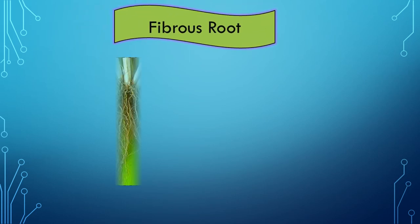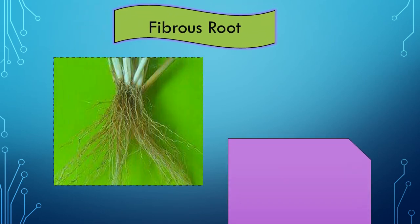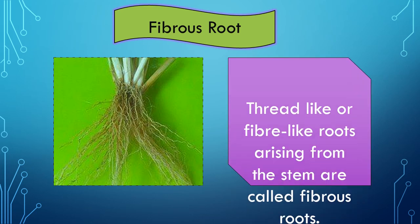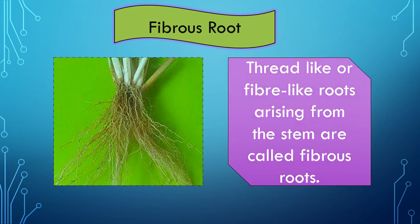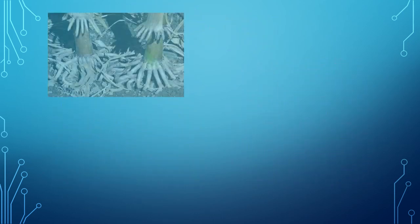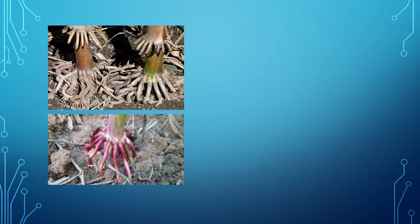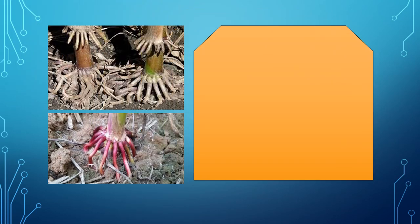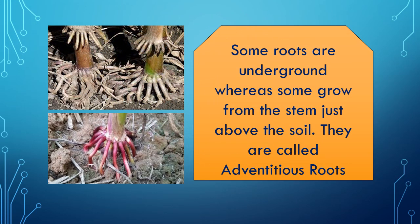The second type is fibrous roots. Fibrous roots are thread-like or fiber-like roots arising from the stem. All monocotyledonous plants have fibrous roots. Another example of roots are adventitious roots. Some roots are underground whereas some grow from the stem just above the soil — they are called adventitious roots.